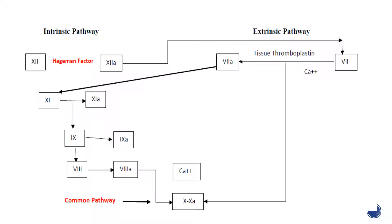The coagulation cascade is initiated through both the intrinsic and extrinsic pathways. The intrinsic pathway is activated when Hageman factor — factor 12 — in the plasma contacts sub-endothelial substances exposed by vascular injury. The extrinsic pathway is activated when tissue factor, released by damaged endothelial cells, makes contact with clotting factor 7 — also known as serum prothrombin conversion factor. Both pathways lead to a final common pathway when each has activated factor 10, which directly proceeds to clot formation.